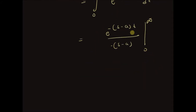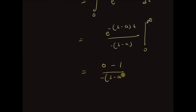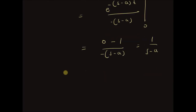For t equal to infinity the expression is clearly 0, and for t equal to 0 the numerator is 1. So it equals 0 minus 1 over minus (s minus a), which is equal to 1 over s minus a. Note that this integration and formula is only valid for s greater than a.